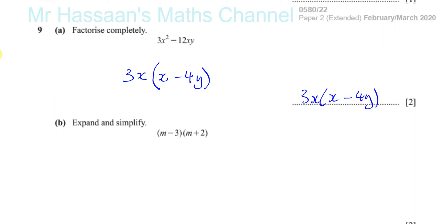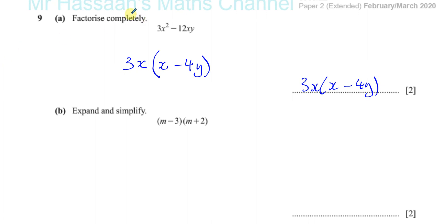And there's the answer, simple as that. The reason it says completely is because there's a factor of a three and also an x in there.